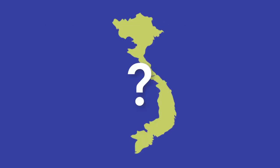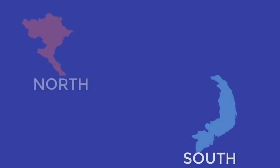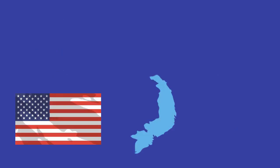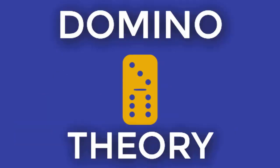Well firstly, what was the conflict actually about? It was a civil war split into two sides: those helping South Vietnam and those helping the communist North Vietnam. The United States was fighting because they wanted to contain communism under the idea of the domino theory.